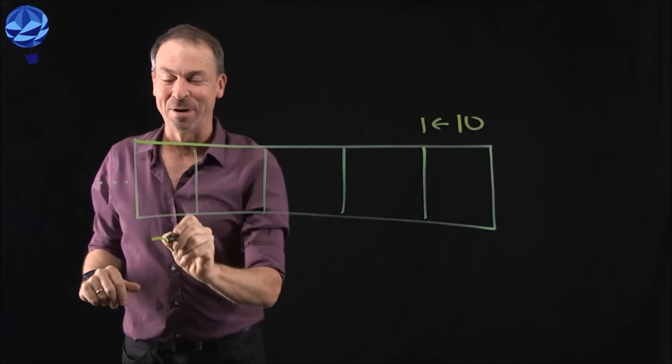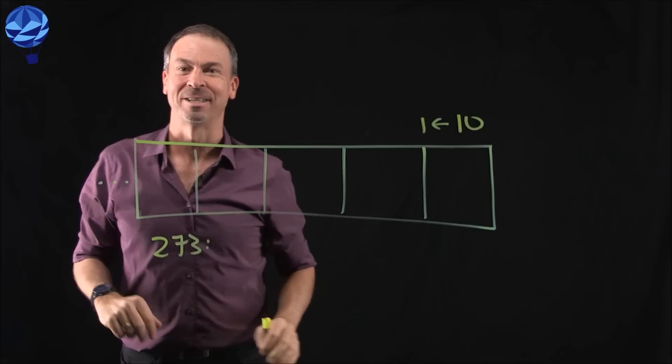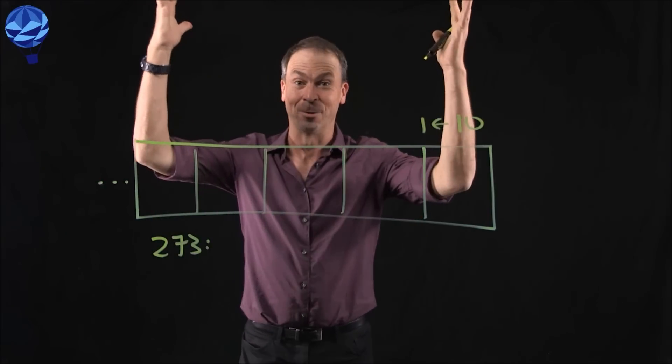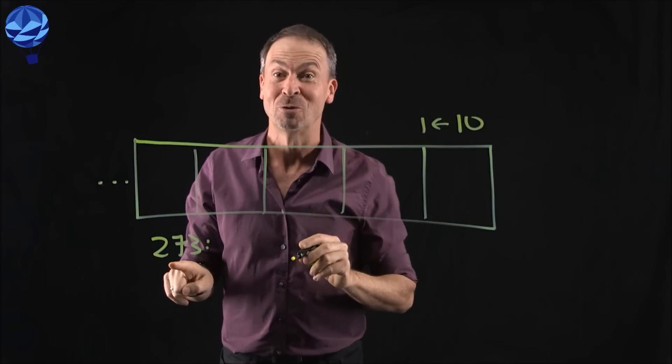In fact, let's be insane. Let's put in 273 dots in a 10-1 machine. What's the code for this number going to be in this machine? Wild. All right, first of all, let me draw 273 dots.